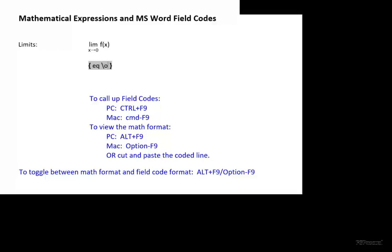The command overstripe is for superimposing two characters or strings over each other. We will superimpose the string lim with the down script or subscript x approaches zero.